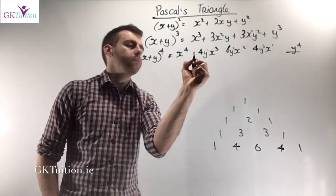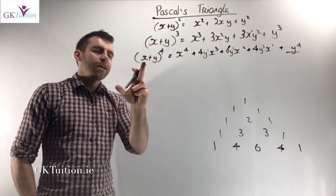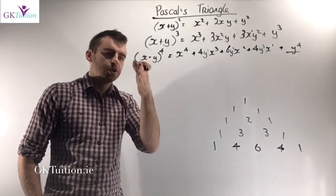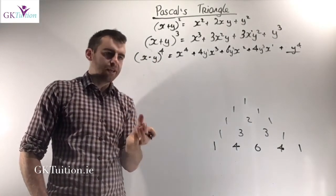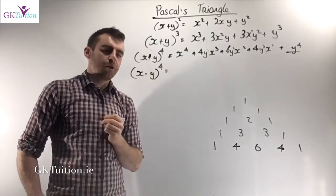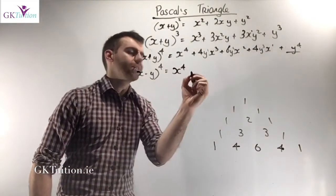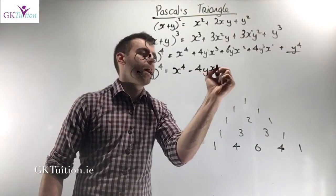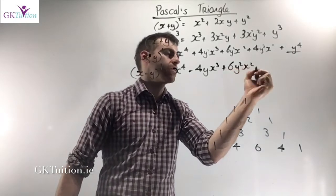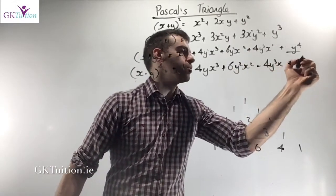Now let's consider what would happen if this were a minus — imagine x minus y to the power of 4. If it's x plus y, they're all pluses. But with x minus y to the power of 4, the first term is still positive: x to the power of 4. Then the second term is negative: minus 4x cubed y. The third term is positive: plus 6x squared y squared. The fourth is negative: minus 4x y cubed. And the last is positive: plus y to the power of 4. Every second term is negative.